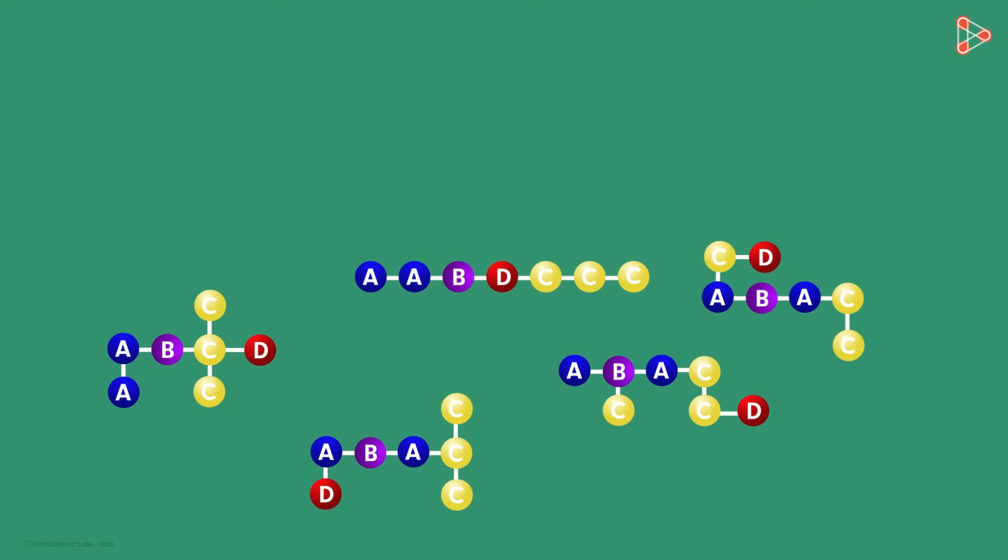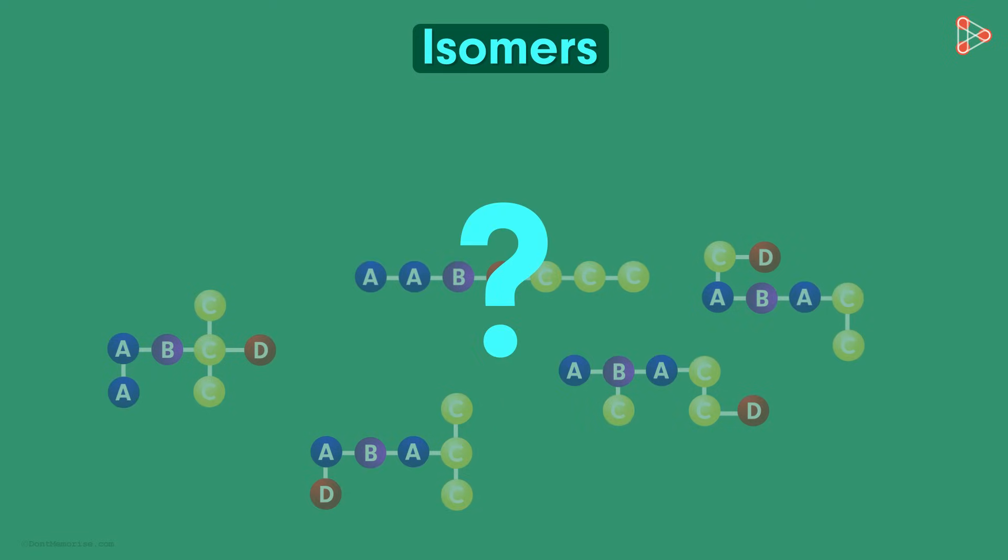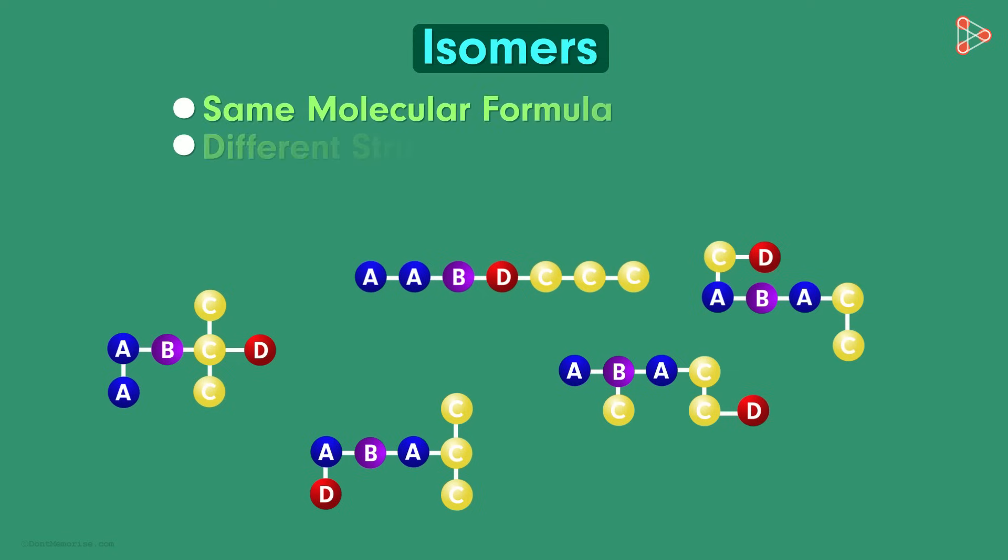All these structures can be called isomers of each other. Isomers are defined as compounds which have the same molecular formula but different structural formulas and different properties.